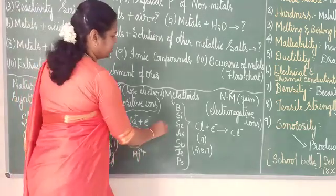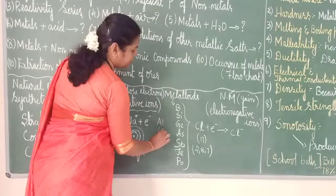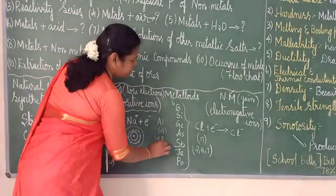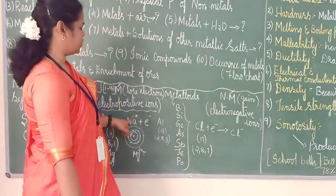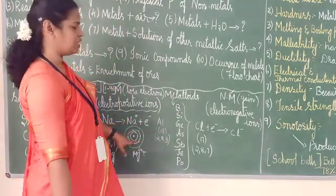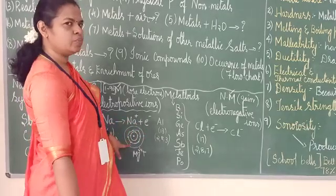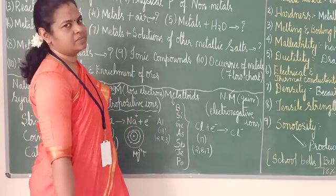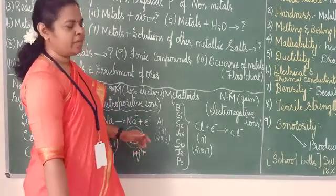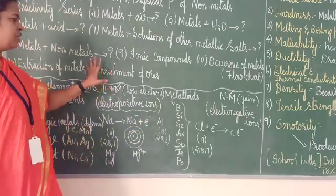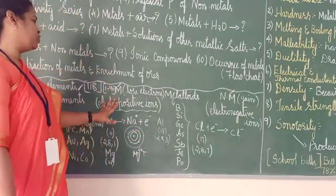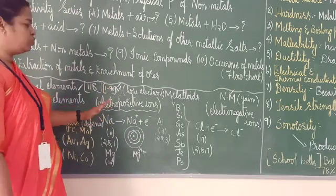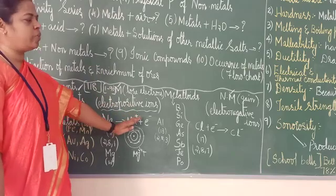Similarly, aluminum has atomic number 13. If you split 13, it is 2, 8, 3. So 3 electrons are in the outermost shell. Aluminum will give up all 3 electrons and become Al³⁺. So metals lose electrons and can be called electropositive — they produce electropositive ions.